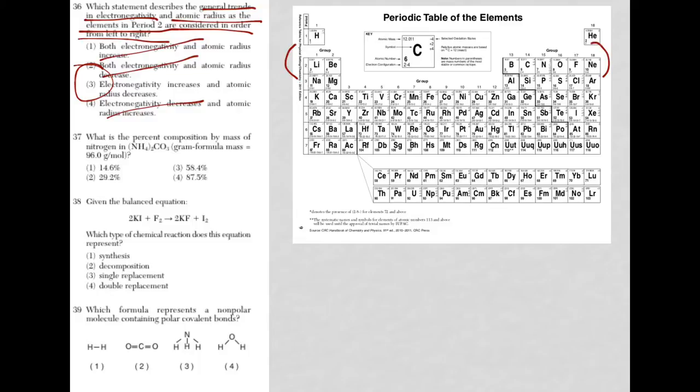Let's go to 37. What is a percent composition by mass of nitrogen in? This is ammonium carbonate. And this is definitely a skill, this is a mathematical question.